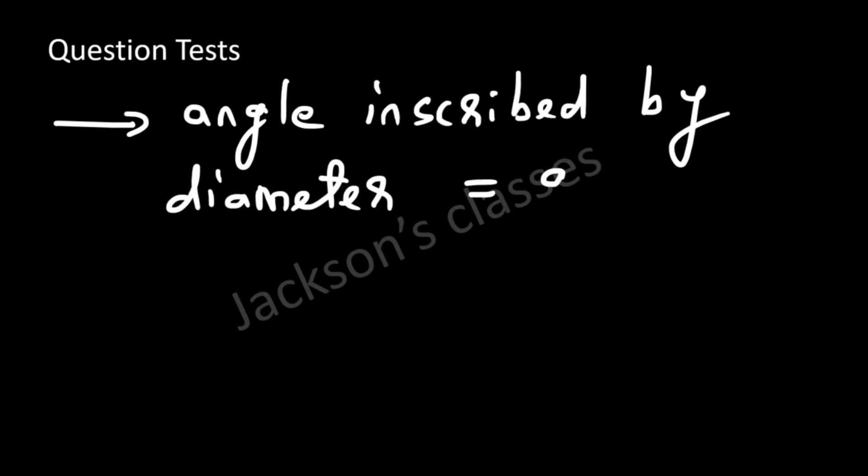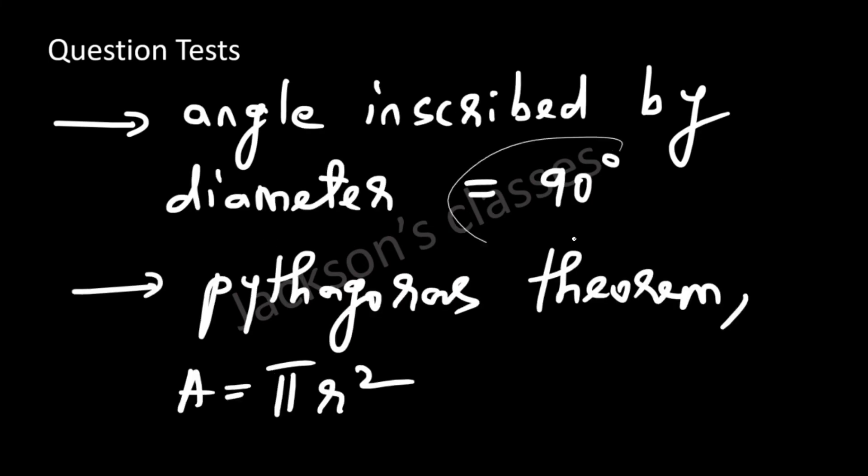Now let's look at what is being tested in this question. You should know that the angle inscribed by a diameter is equal to 90 degrees in a circle. So you have a circle, let's say this is the center. So this is the diameter. If you inscribe any angle over here, this angle will be 90 degrees.